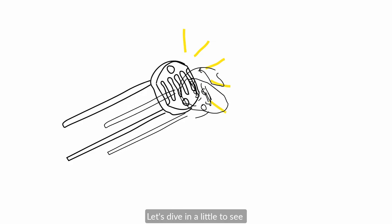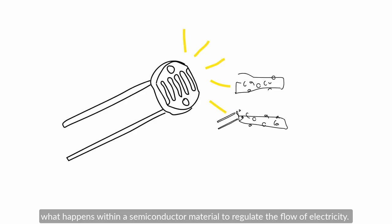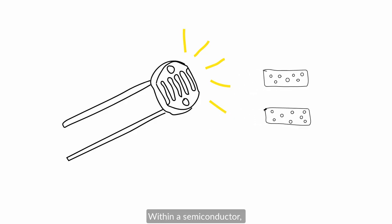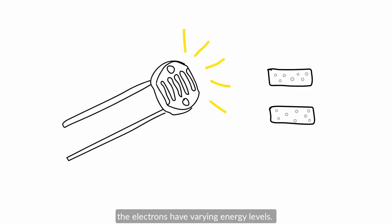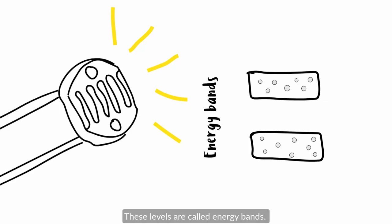Let's dive in a little to see what happens within a semiconductor material to regulate the flow of electricity. Within a semiconductor, the electrons have varying energy levels, and they arrange themselves so that similar energy levels are near each other. These levels are called energy bands.